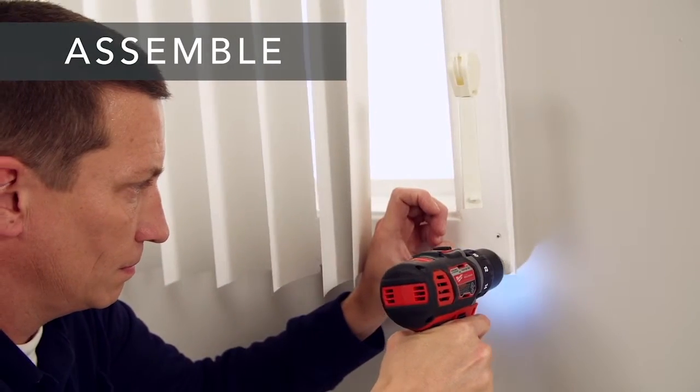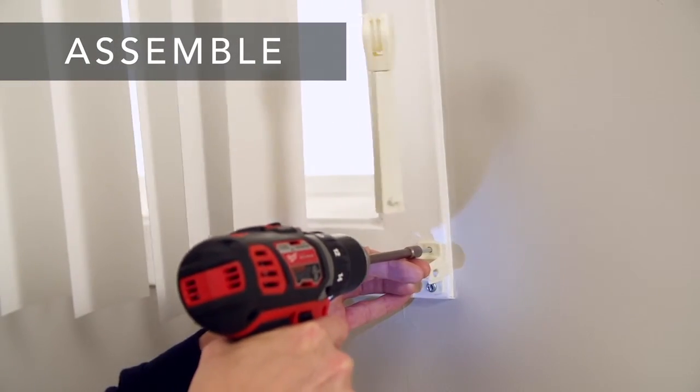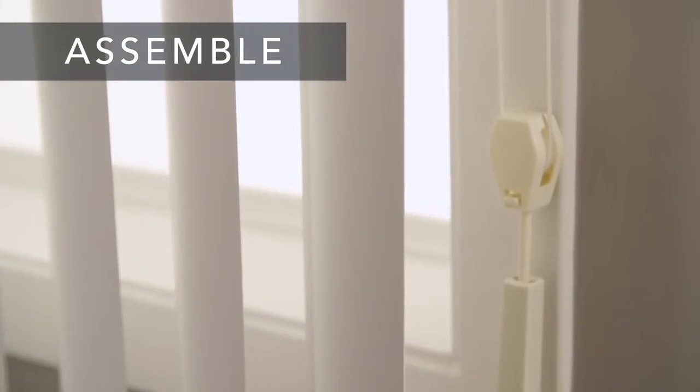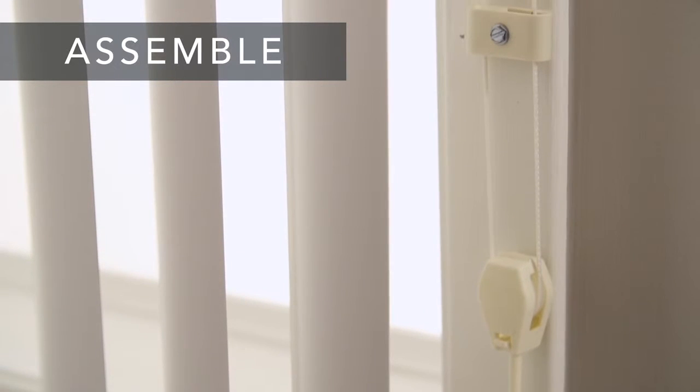The final step is making sure the cords are taut and attaching the tension pulley and hold down device to the wall. This will create a safer environment for kids and pets if used correctly and consistently.